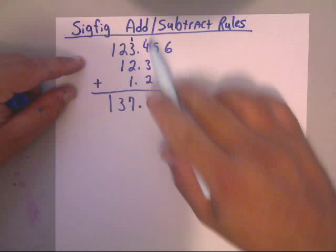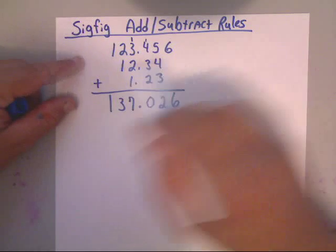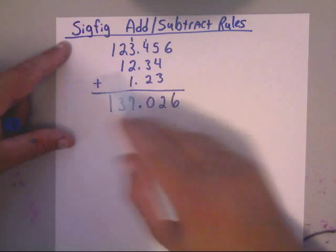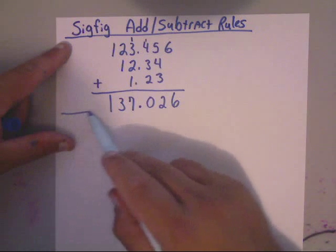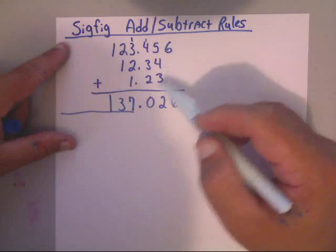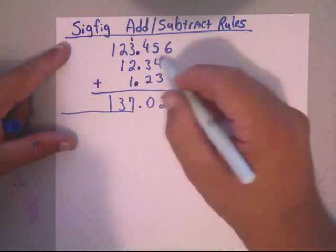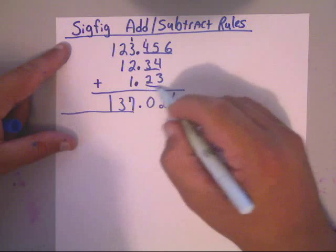At first it's just ordinary math. Now the sig fig rules with addition and subtraction is basically this: we don't care how many numbers you add up in the front here and how many numbers you keep in the front. That's not a big deal. What matters is the number that you keep behind the decimal.